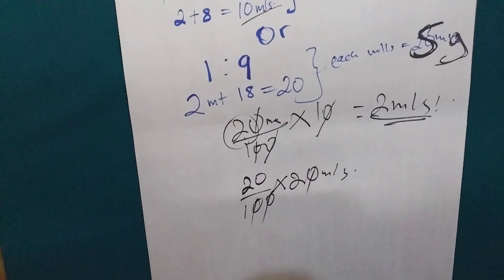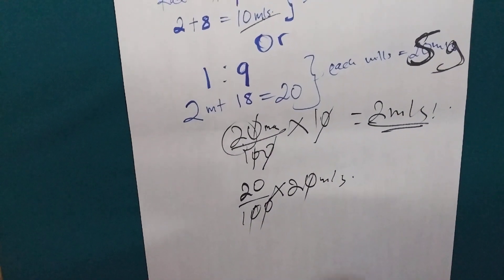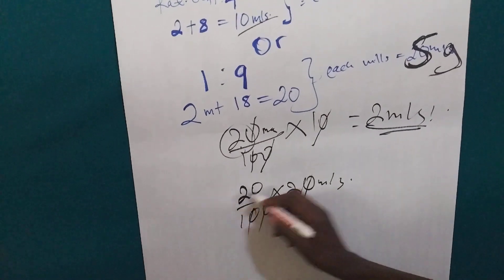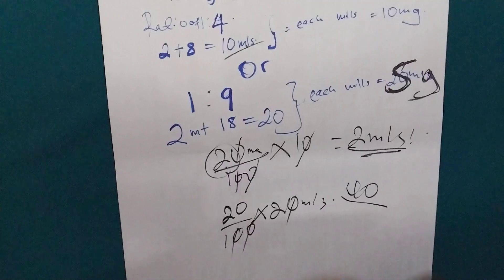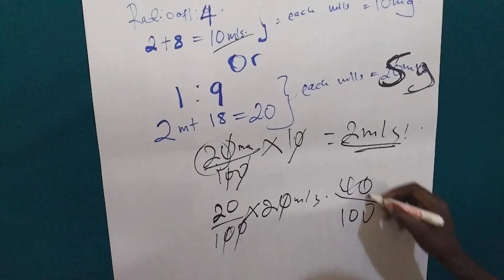So, if we calculate this, how do we get it? This one times this is 40. Then we divide by 100.